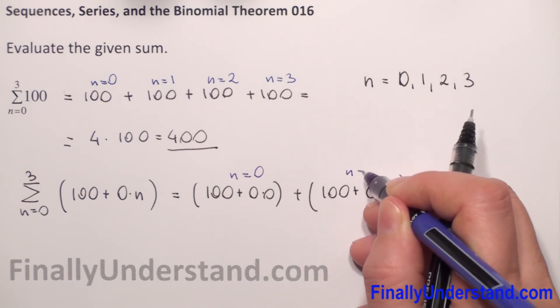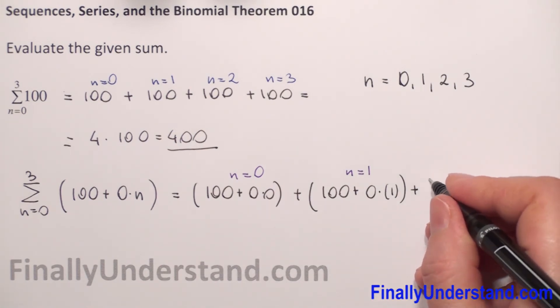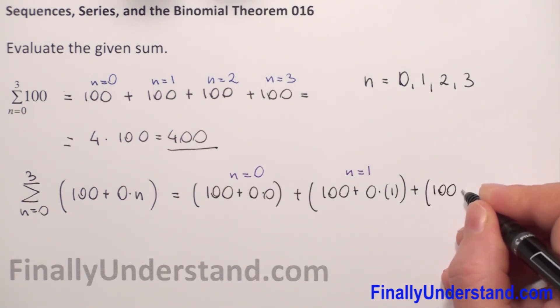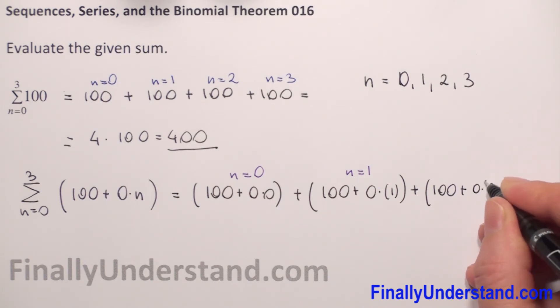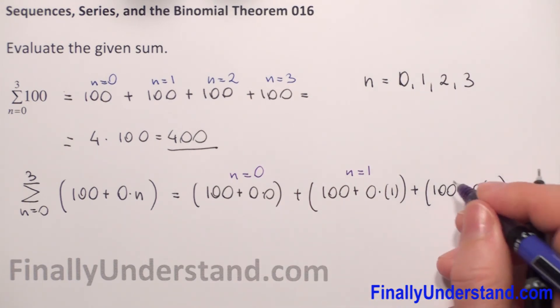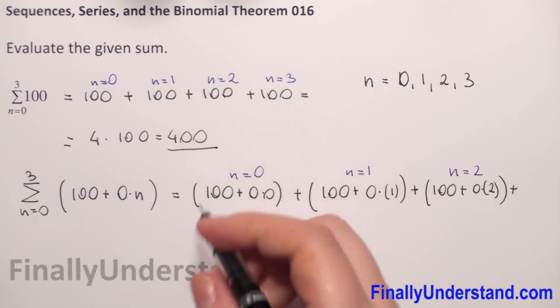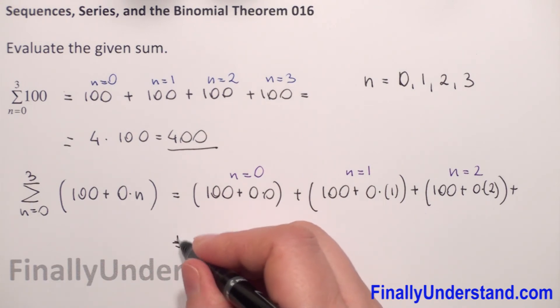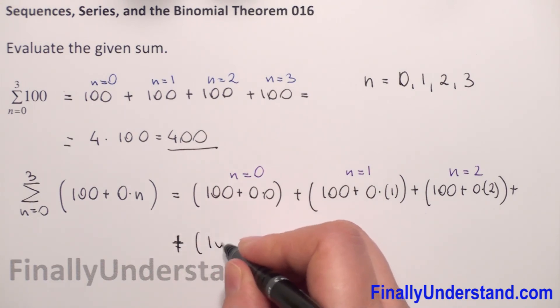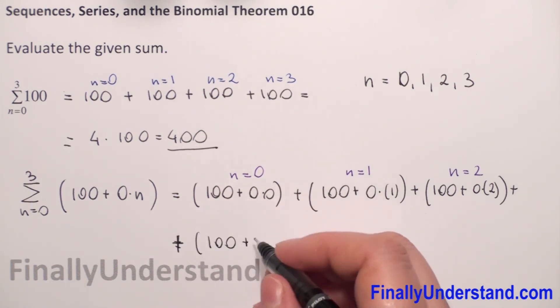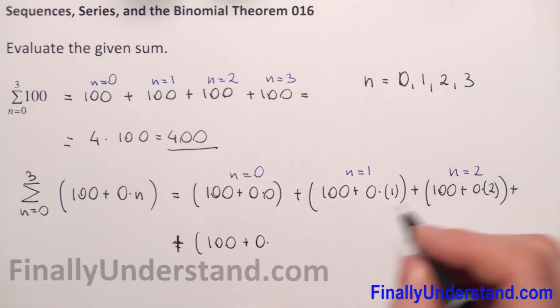Plus the next term will be 100 plus 0 times 1 for n equals 1, plus 100 plus 0 times 2 for n equals 2, and plus 100 plus 0 times 3 for n equals 3.